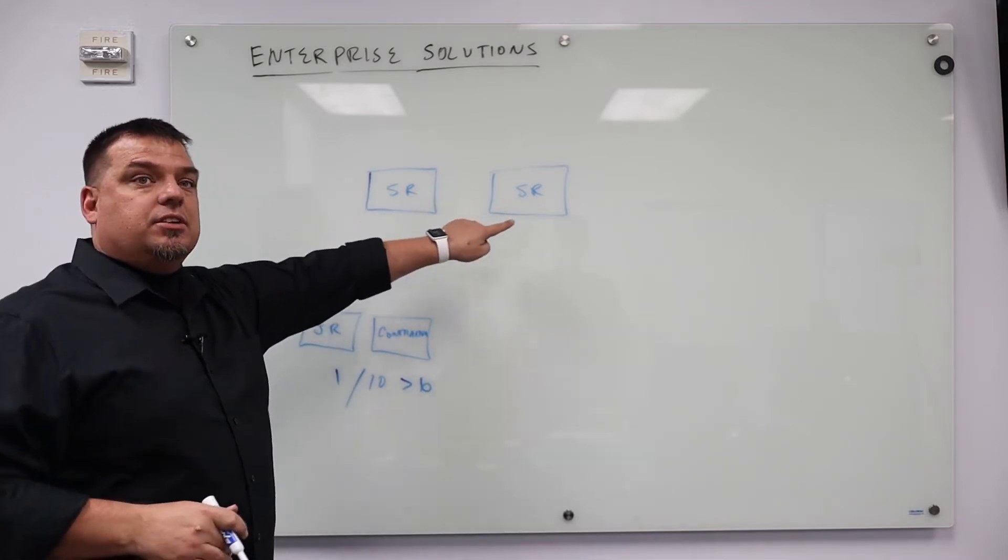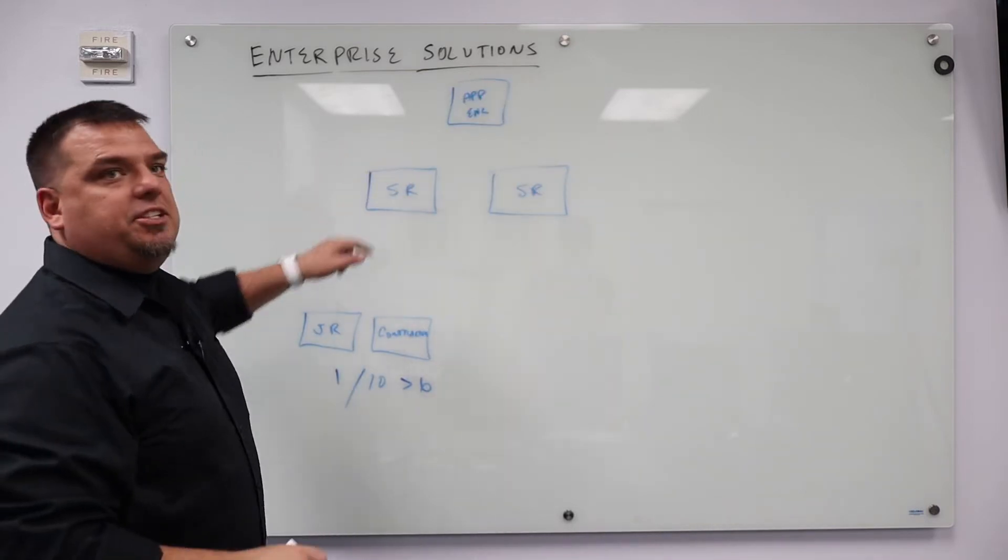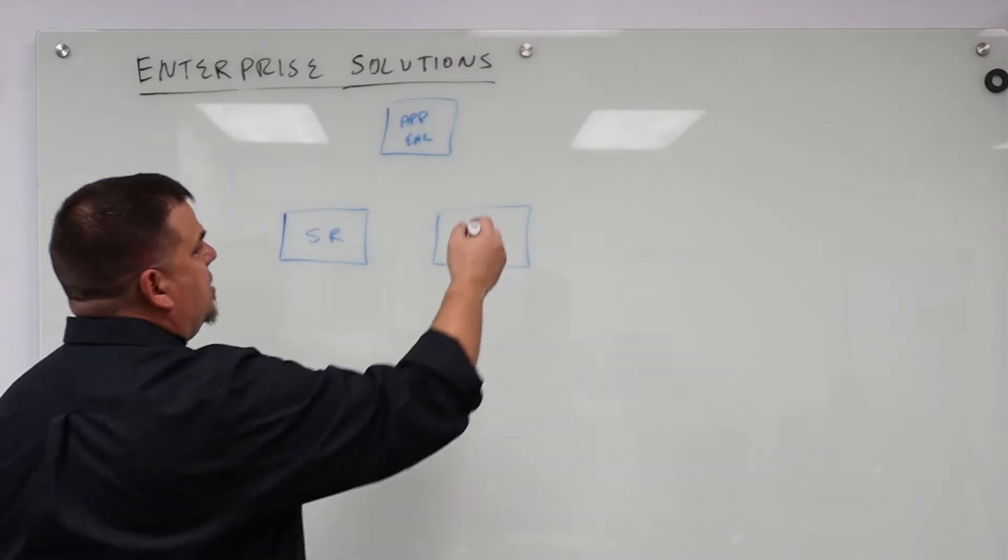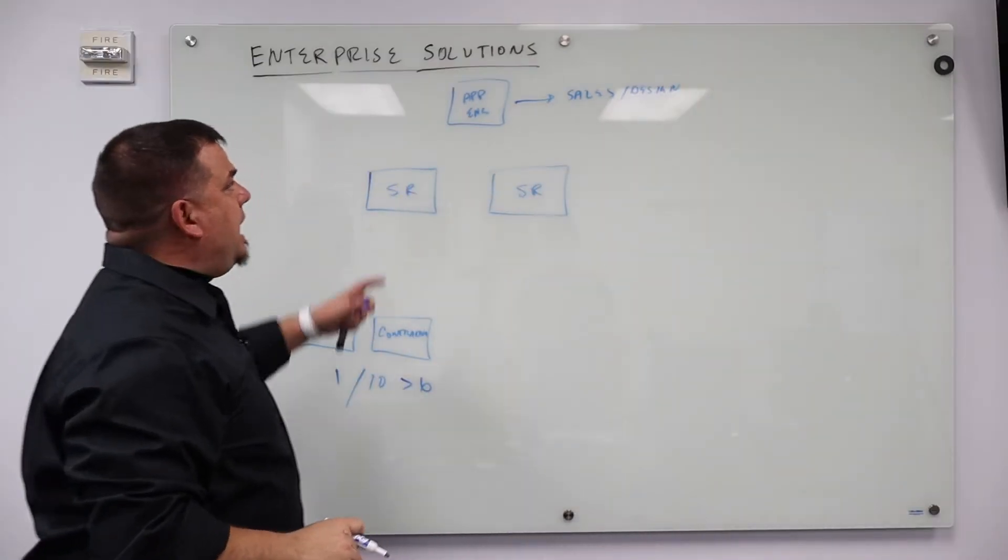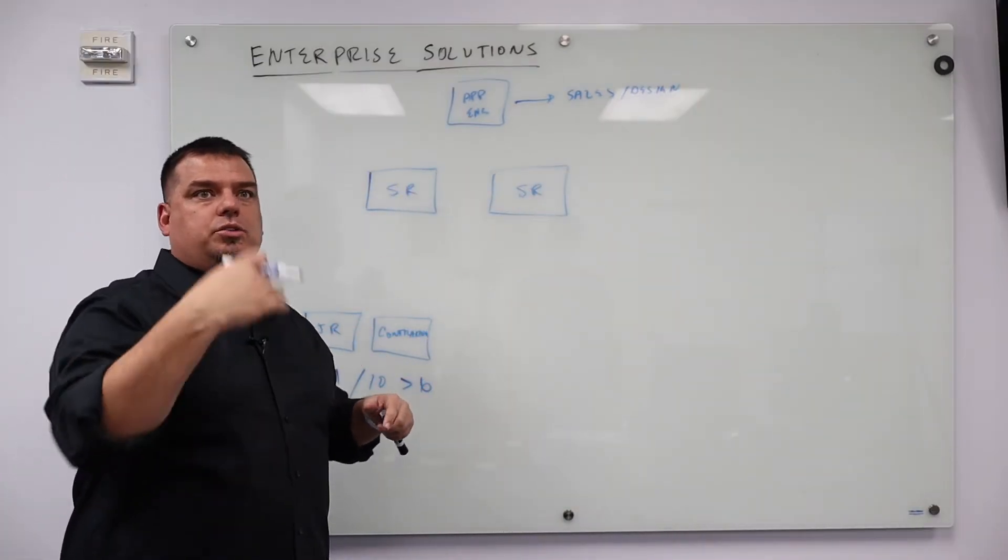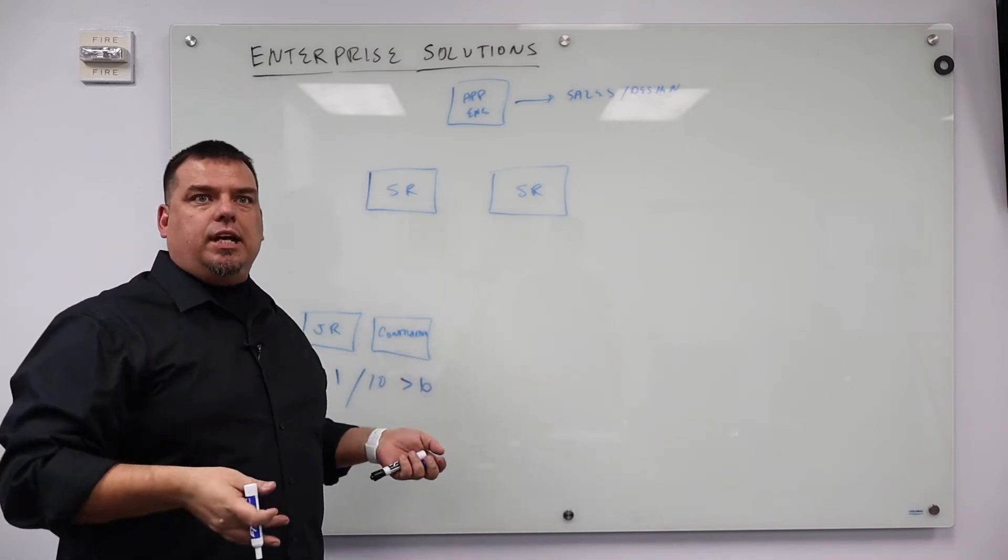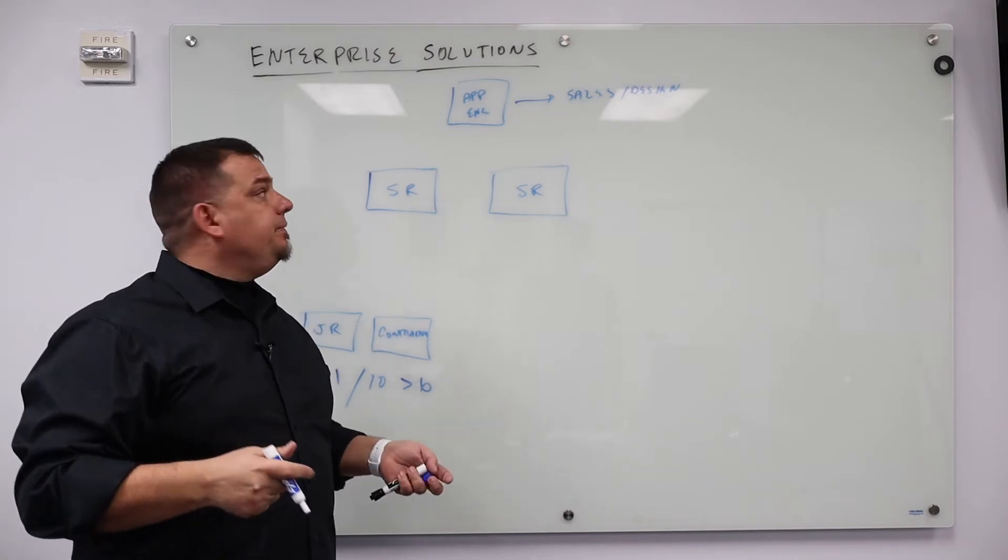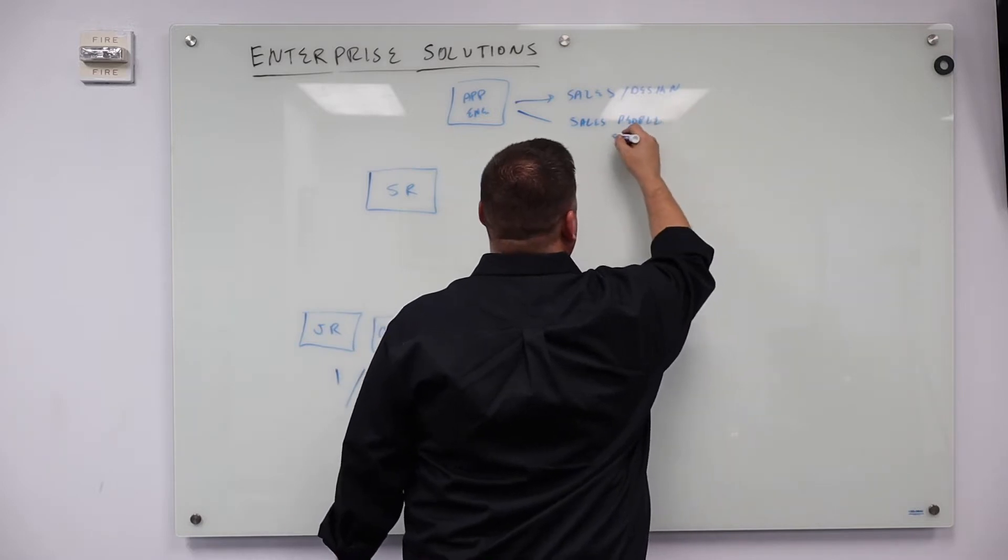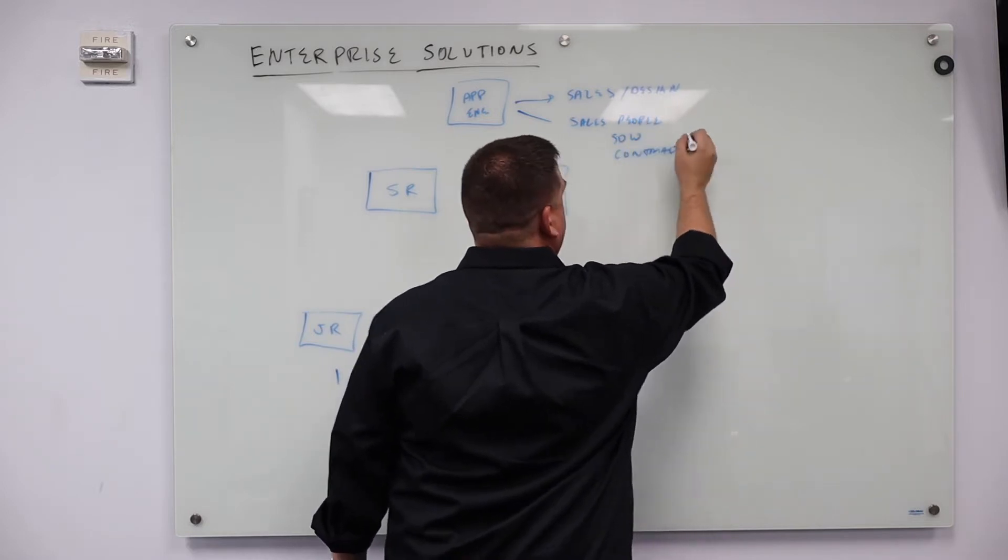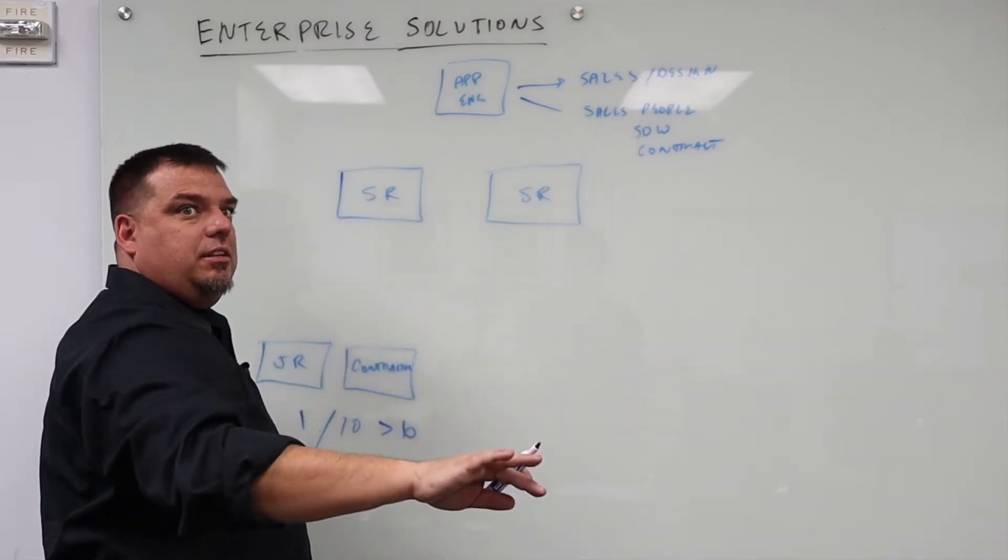So I've got my senior engineers and then I also have my apps engineer. My applications engineer used to be a senior engineer. So he used to be a rock star. The applications engineer does sales and design. So the applications engineer is the forward-facing person who goes to the customer and hears them out about their problem, takes the statement of work, and turns it into a quoted solution. That applications engineer works with the sales department to write a scope of work, to do the SOW and to do your contract. And that apps engineer and those senior engineers are the ones who are always talking to the customer.